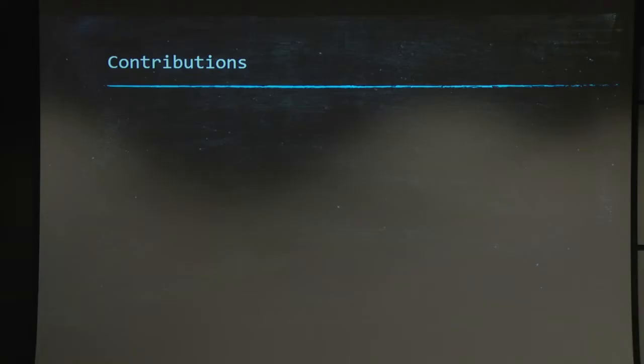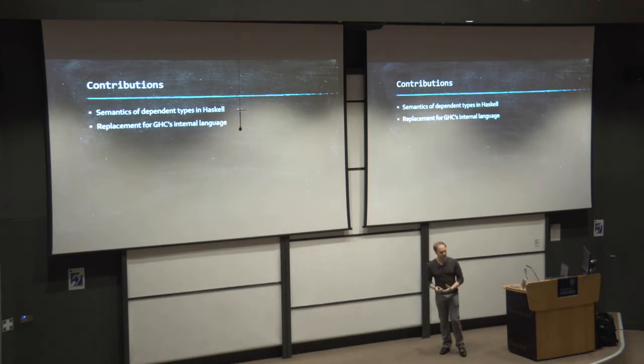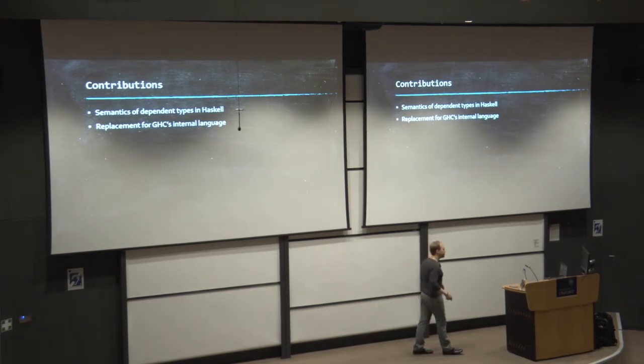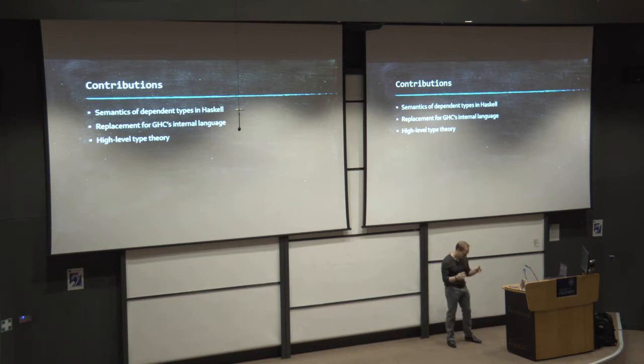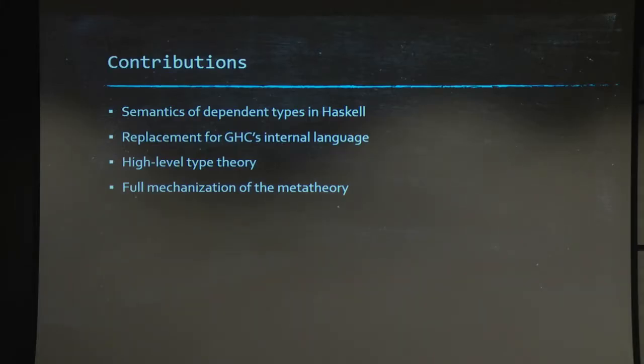So, in particular, we introduce, we study what it means to have dependent types in Haskell, what kind of semantics we can give them. We also introduce a replacement for GHC's internal language that supports full-dependent types. We also introduce, aside from that, a high-level theory that allows us to specify clearly what kind of type features we have. And finally, we have a full mechanization of type safety and of other important properties I'll come to, so that we can have rock-solid confidence in our results.